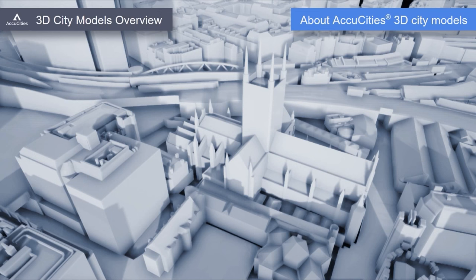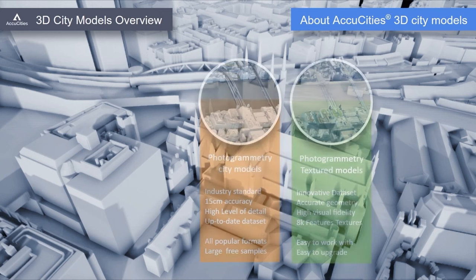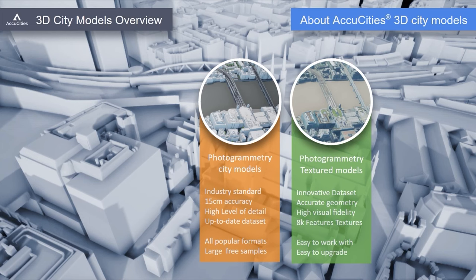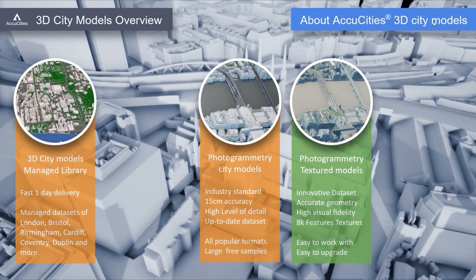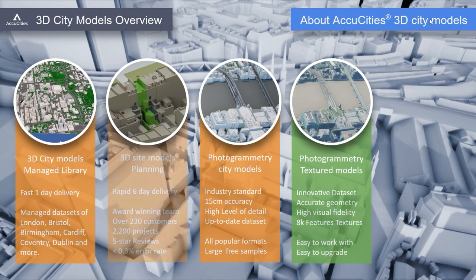AccuCities is a specialist 3D city modelling agency. We capture photogrammetric 3D city models, both in CAD solid and textured formats. We capture and manage a library of 3D city models for our customers, mostly architects and building consultants. We also capture small and medium-sized 3D models to order, mostly for planning. To date, we have delivered over 2,200 projects to more than 230 customers.